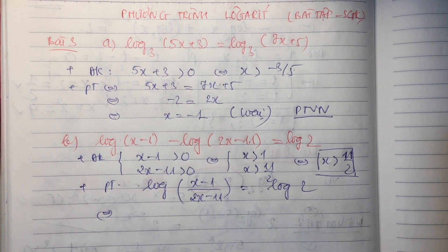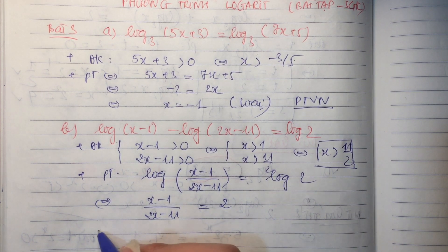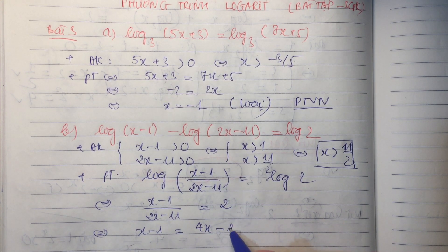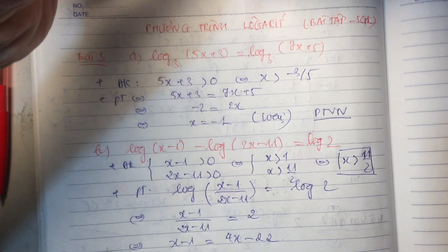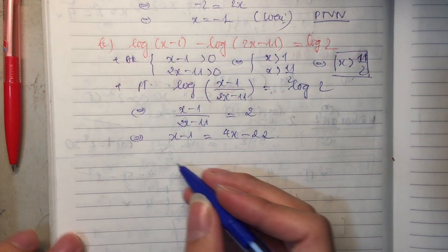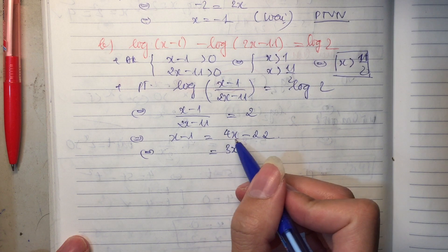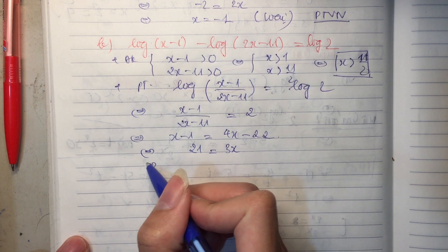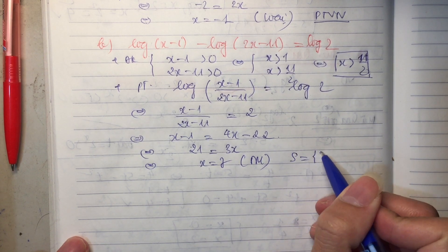Sau đó bỏ 2 cái logarit ở 2 bên, chúng ta sẽ còn (x trừ 1) chia cho (2x trừ 11) bằng 2. Nhân chéo lên: x trừ 1 sẽ bằng 4x trừ 22. Rút gọn đi thì còn 3x bên này. Bên kia chuyển về là trừ 1 cộng 22 còn dư 21. Vậy x bằng 7. 7 thì chắc chắn lớn hơn 11 phần 2, thỏa mãn. Nghiệm của bài này có 1 nghiệm duy nhất là 7.